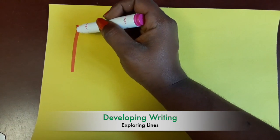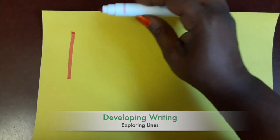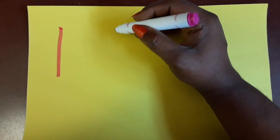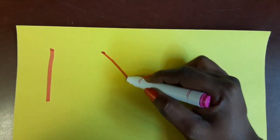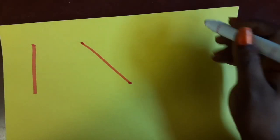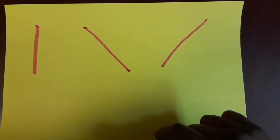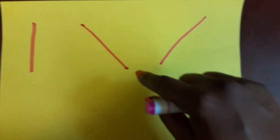Alright kids, I want to test you. I want to see if you remember the name of the lines we've been practicing. What is the name of the line that starts at the top and goes straight down? Do you remember? It's called an up-and-down line because it starts up and goes down. What is the name for the line that starts at the top and goes down to the right, or starts at the top and goes down to the left? Slanting lines. Good word.